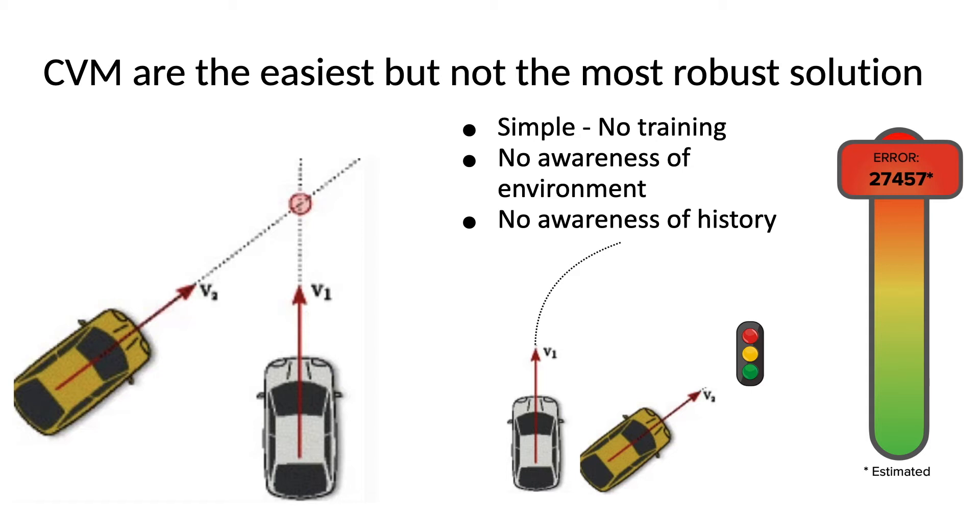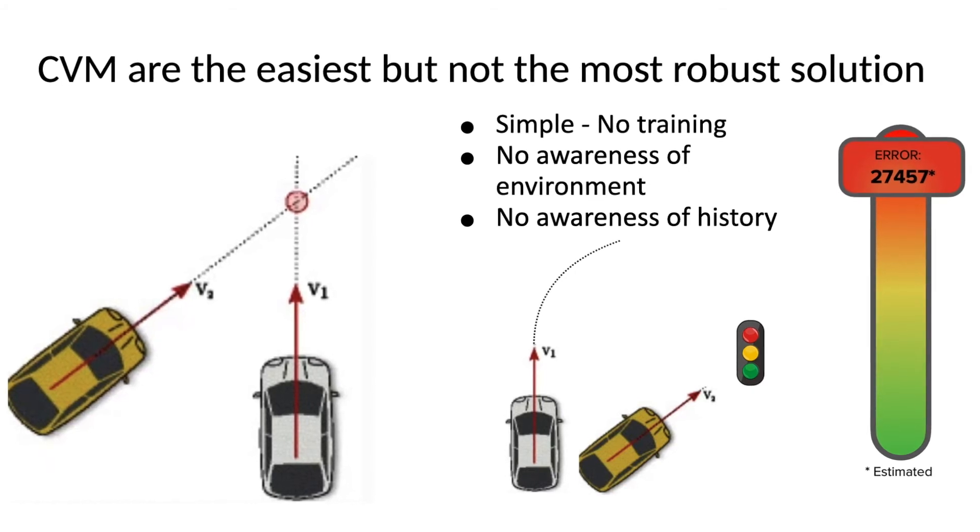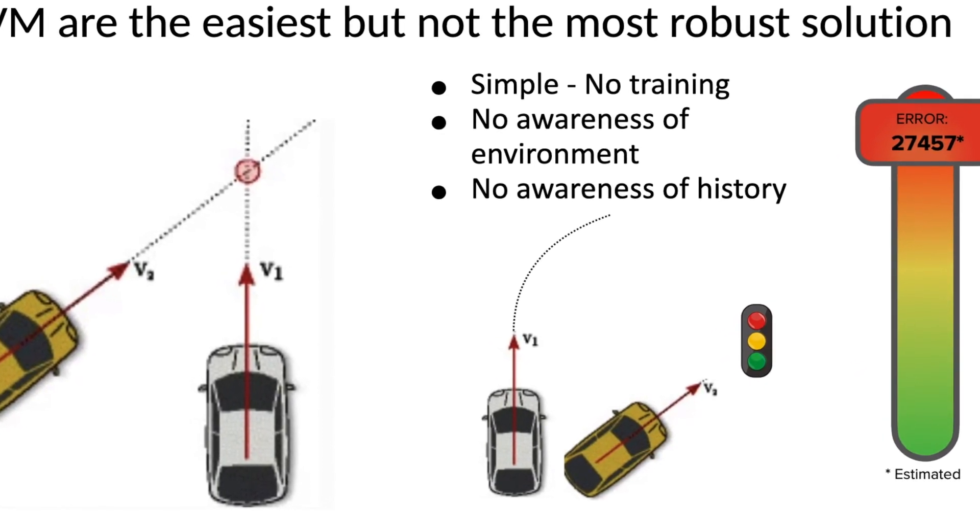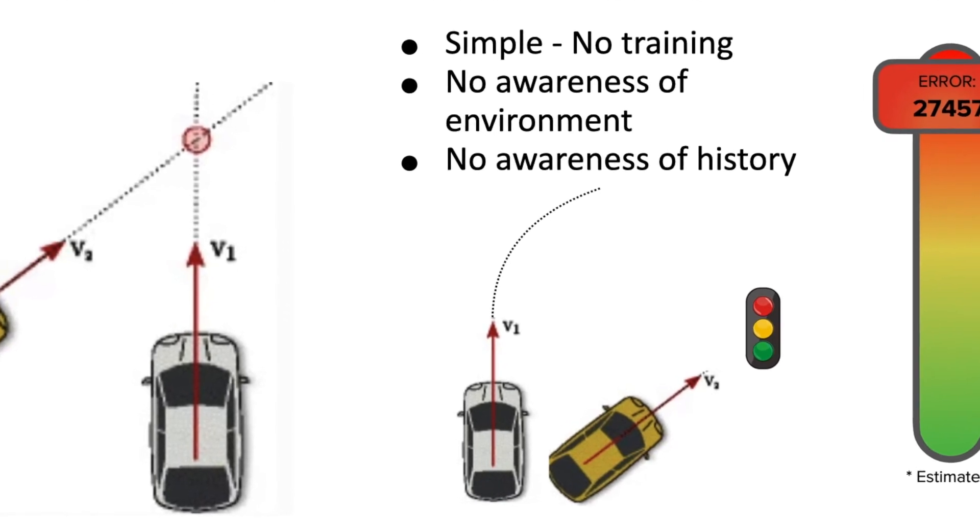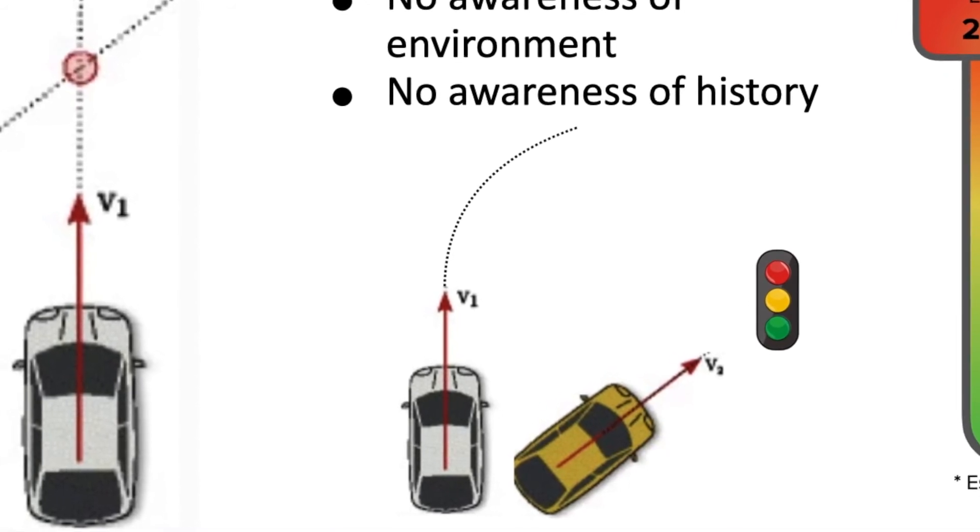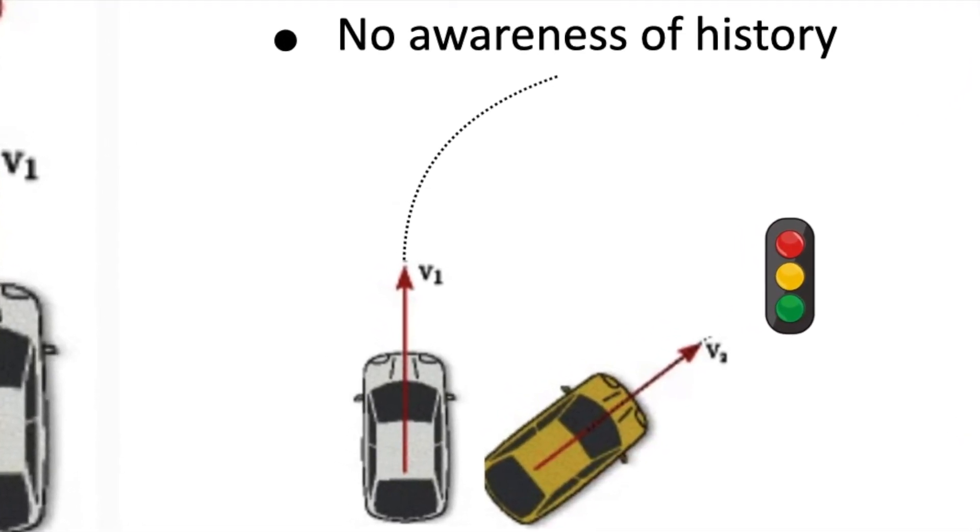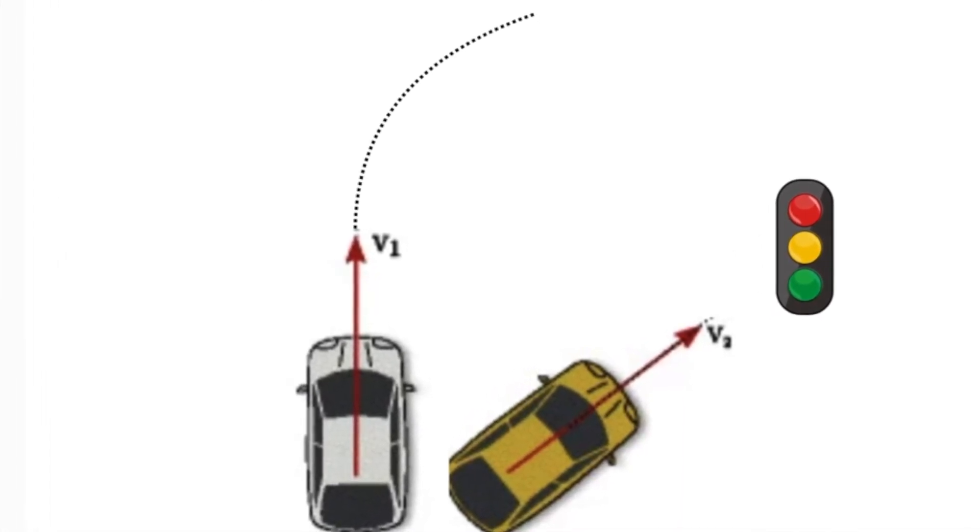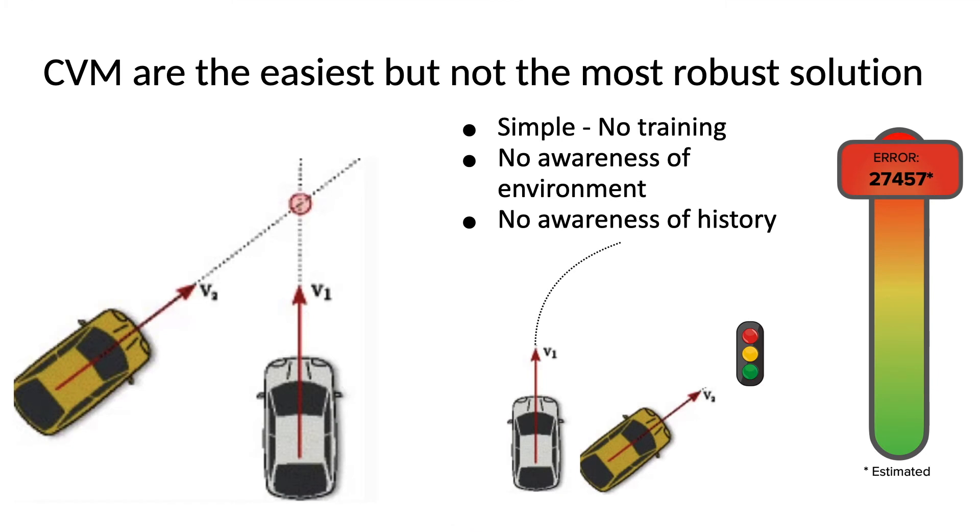Another issue with this type of model is that it has no awareness of its history. Even if the car was right in the middle of a curve, it has no awareness of the previous time steps. So it'll assume the car goes straight, even though if you simply look at the 10 frames before it, you could clearly see that it was already in and will continue to make that turn. It's important to note that the CVM has a very high error score of about 27,000, which, although it's much better than randomly predicting, is a pretty high error score.